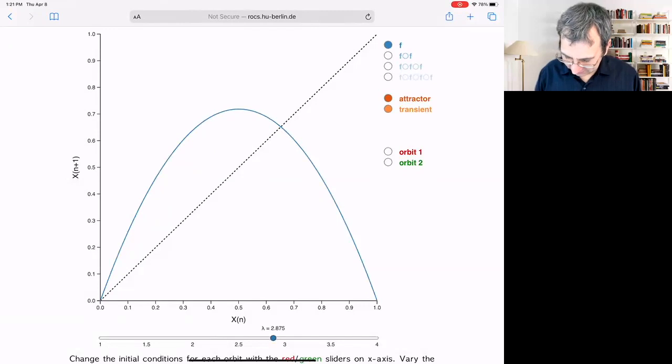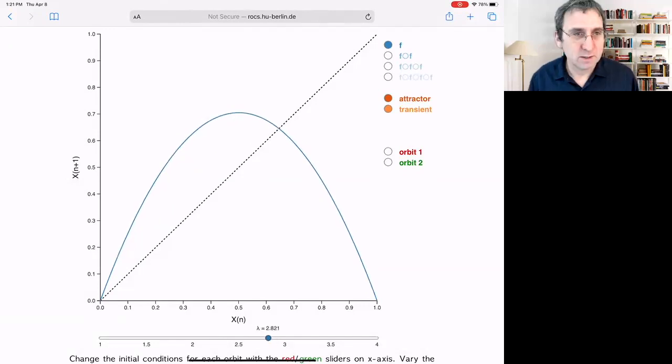Here is 2.8, which is the first thing around 2.8, first parameter value that we'd looked at.